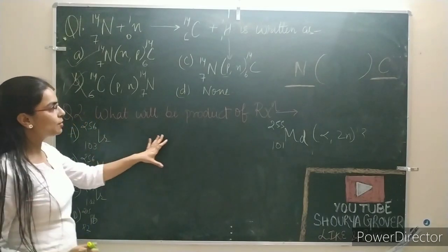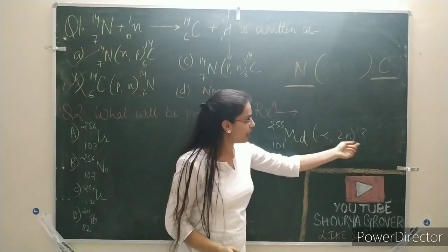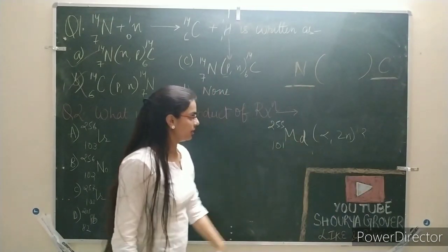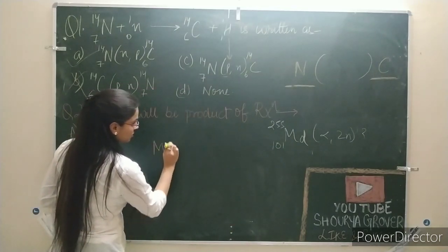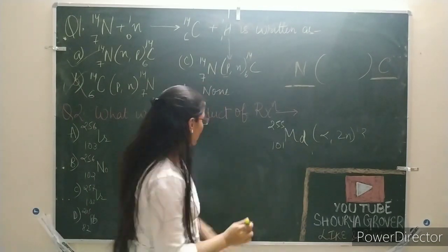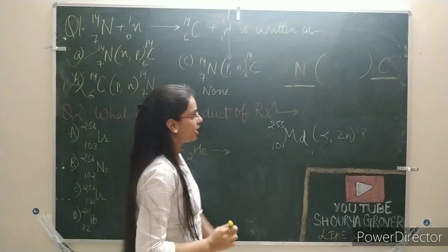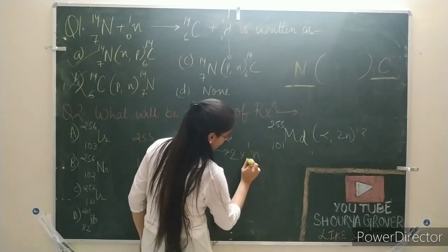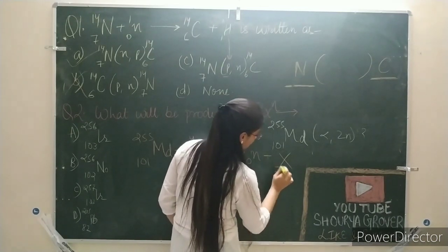What will be the product of the reaction? You have given the reaction: you have given the element and said alpha, 2n, and here it is a question mark. This means the input is given and the product is not given. Now how will we solve it? First we will take our particle — this is the mass number and below is the atomic number. Alpha is bombarding, which means helium nucleus. What will be emitted? 2n — it means two neutrons will come. Plus a question mark: I will take X, with atomic number Z and mass number A.